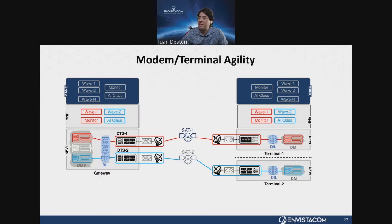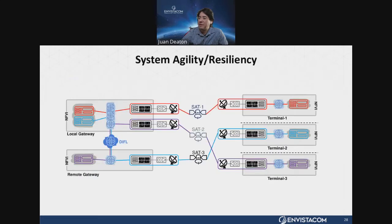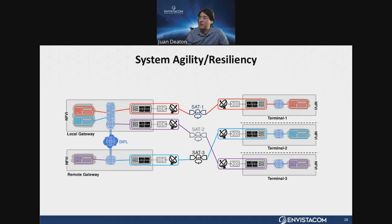The second use case is system resiliency. Earlier slides discussed the digital IF, and this is just to illustrate the point that we have different paths available — the red path is showing the digital modem bank and its connectivity.